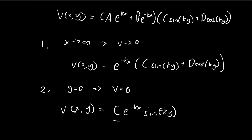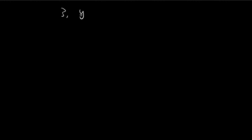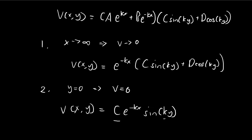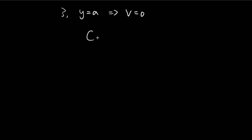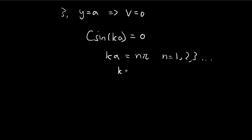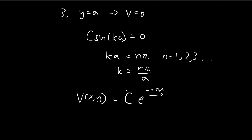We now have two unknowns: k and c. The third condition is that when y is equal to a, the potential is equal to zero — the top plate is grounded. Substituting y equal to a gives c·sin(ka) = 0. This is only satisfied when ka equals nπ, where n is some integer (1, 2, 3, ...), so k equals nπ/a. That means our potential looks like c·e^(−nπx/a)·sin(nπy/a), and all we have left is c.